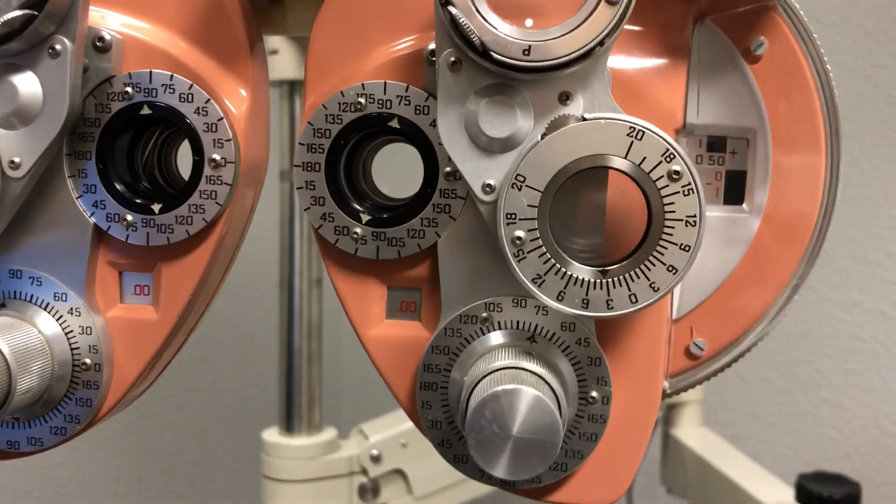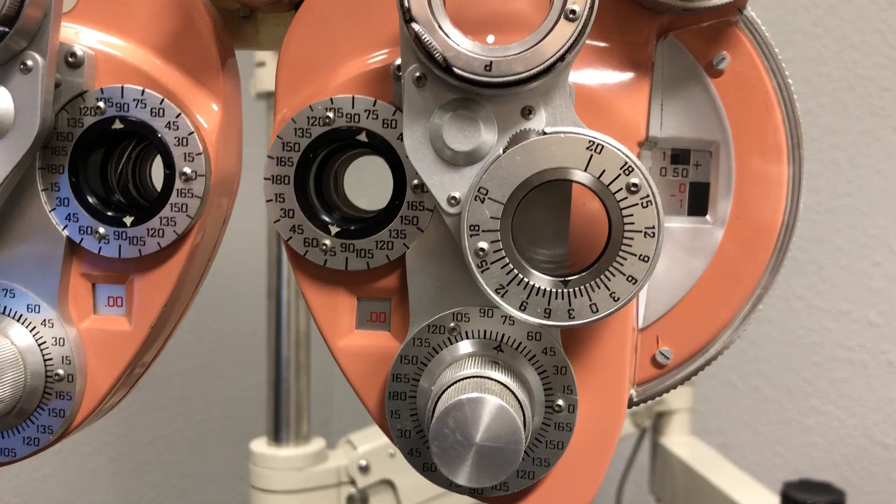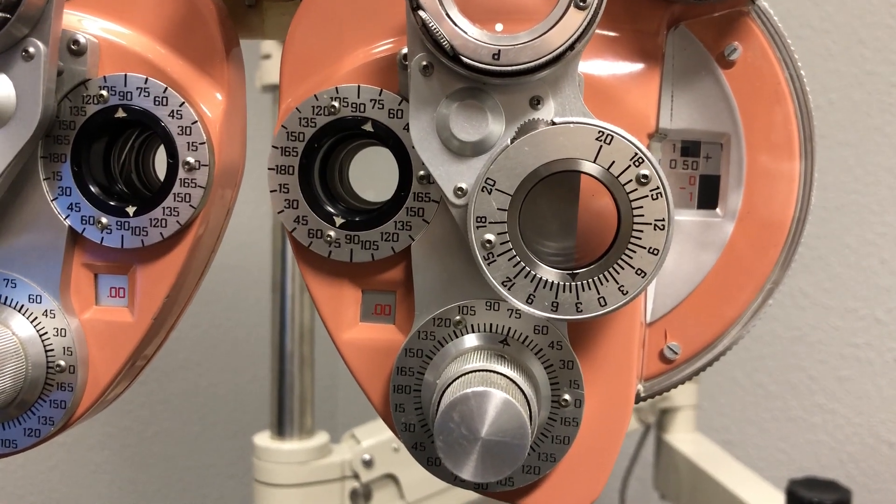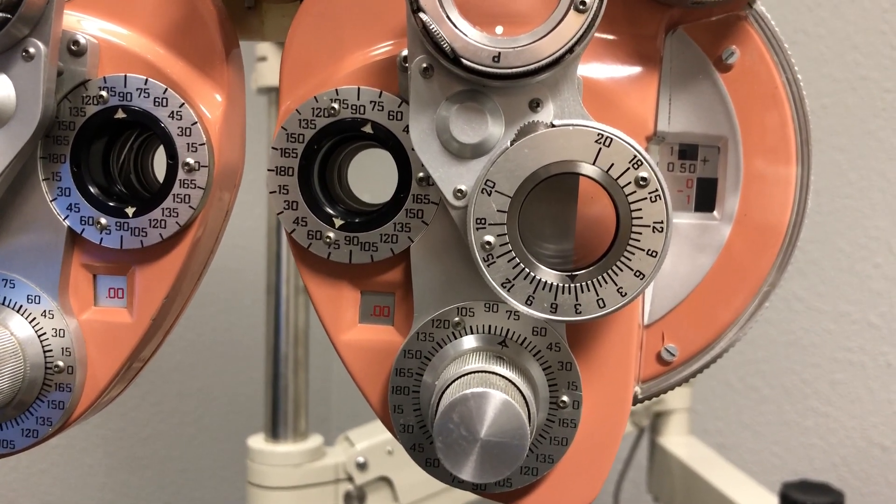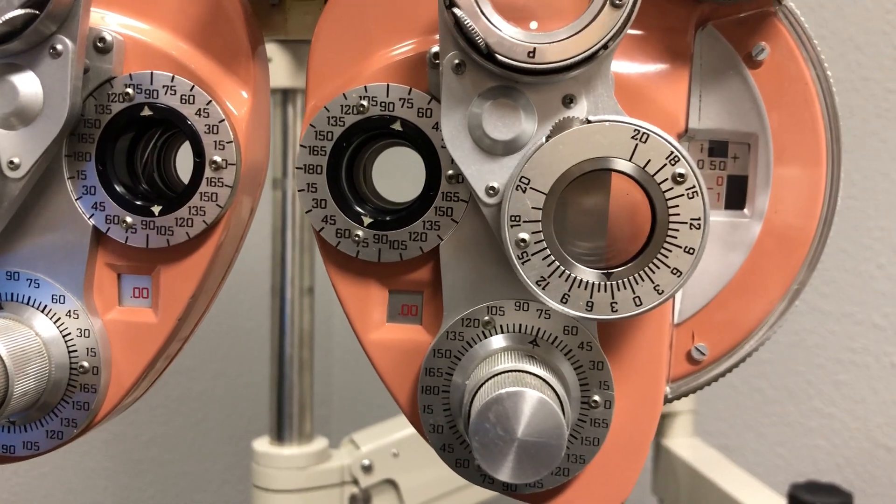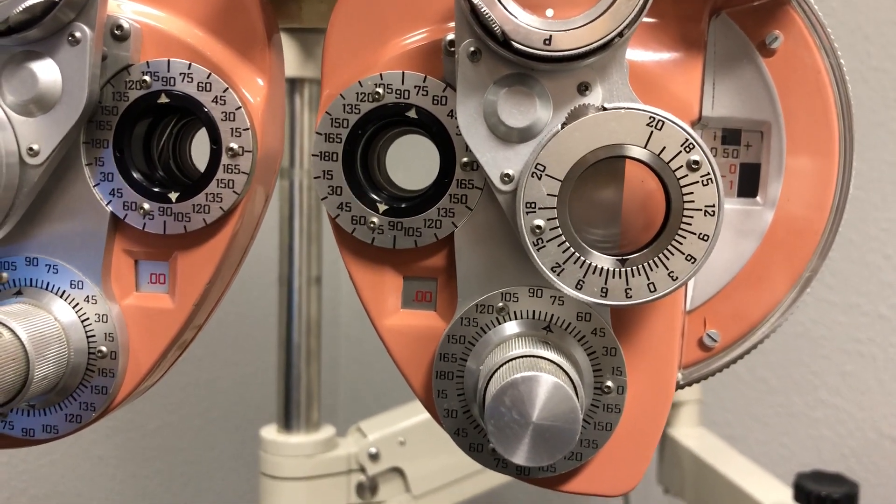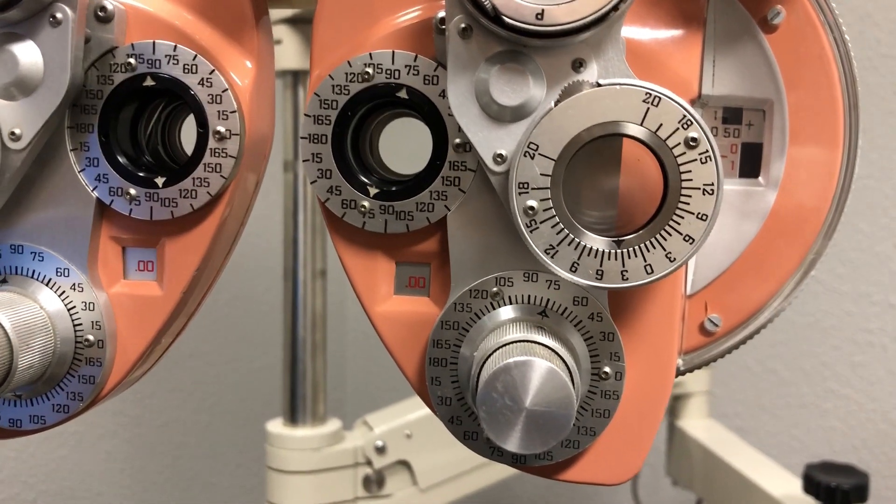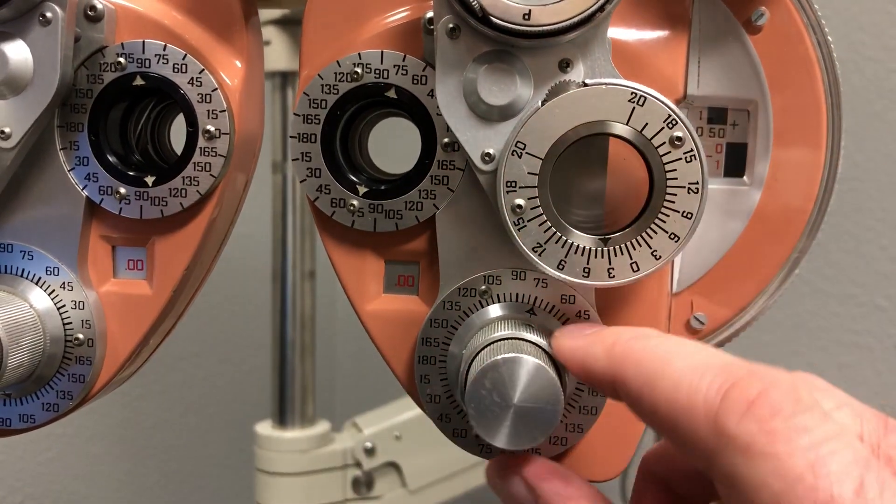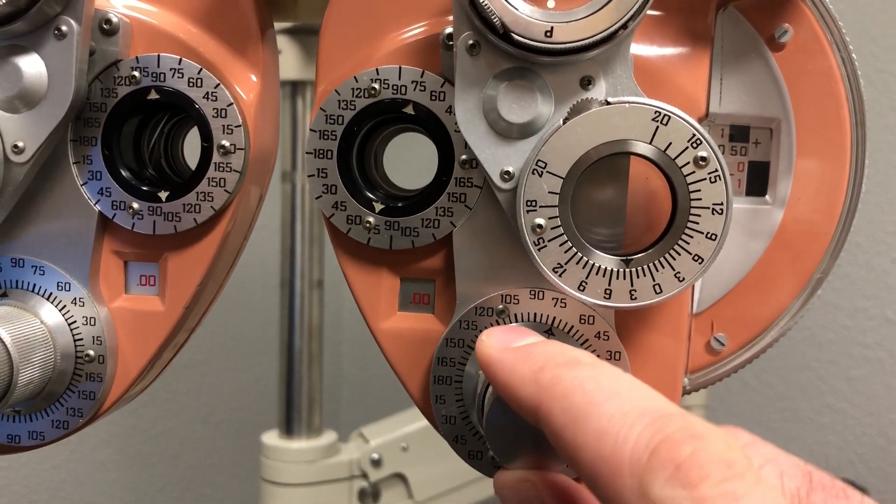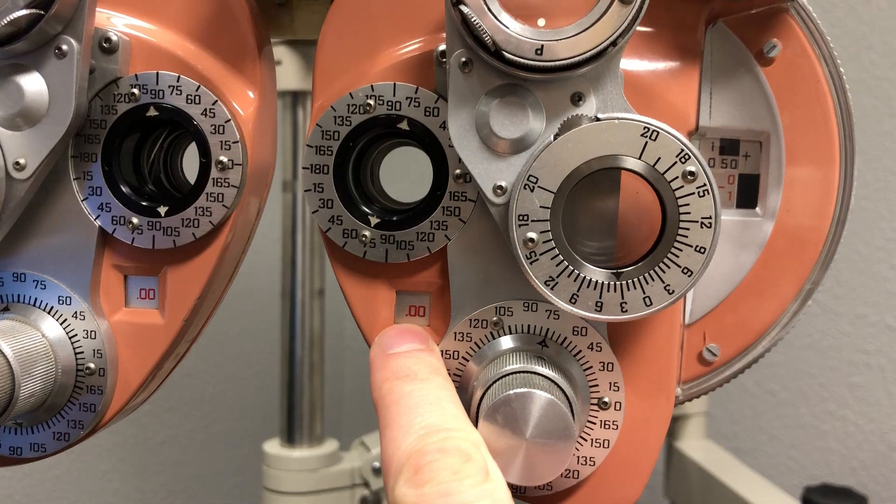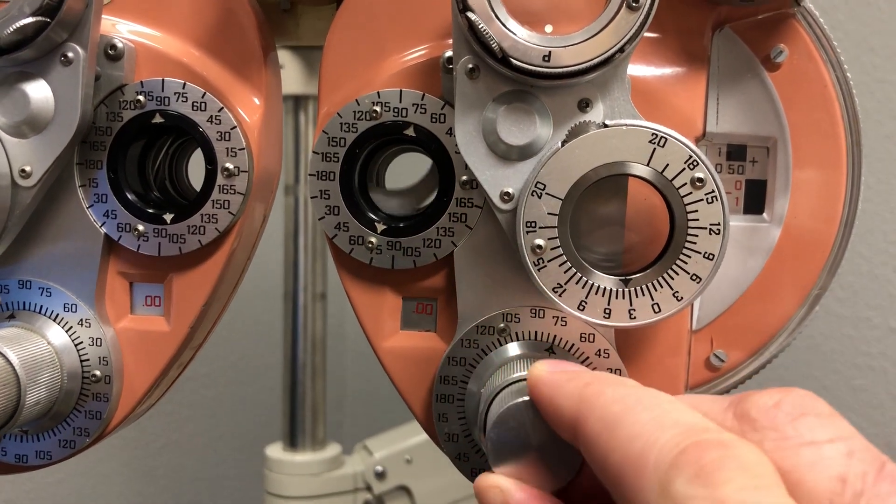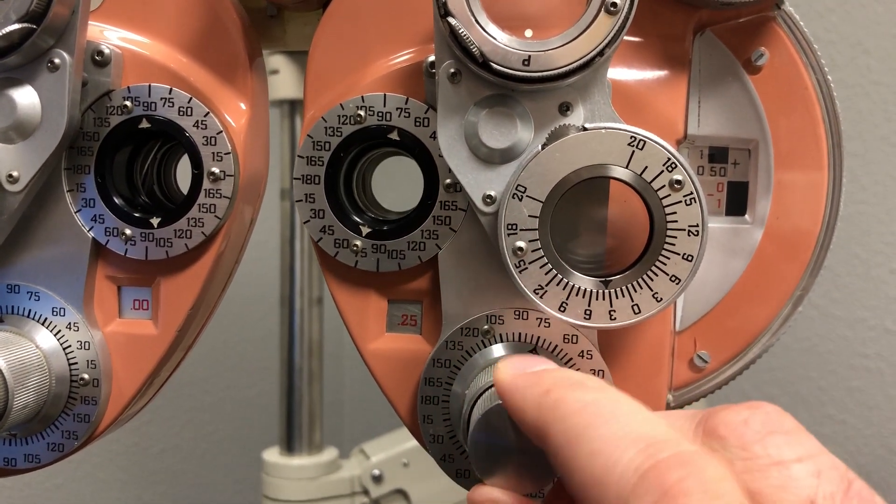If we're going to look at that second number in your prescription, the cylinder power, what we do is change it with this knob. The cylinder power currently is at zero, and if we want to add more cylinder power, we just add with this knob in quarter steps.